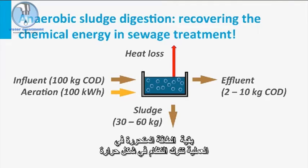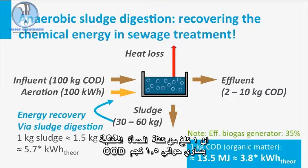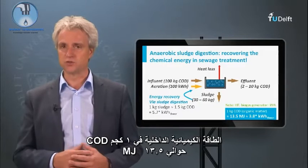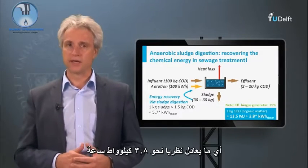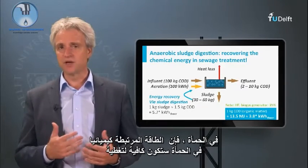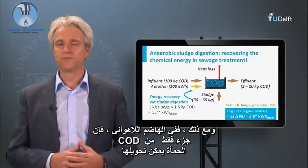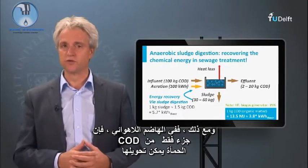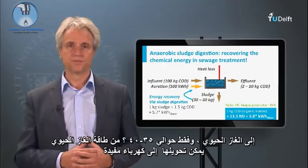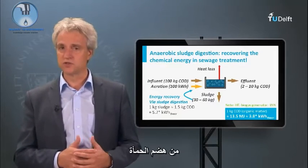The rest of the energy liberated in the process leaves the system as heat. One kg of produced sludge mass equals about 1.5 kg of COD. The chemical energy enclosed in 1 kg of COD is about 13.5 MJ, which theoretically equals about 3.8 kWh. If 50% of the COD entering the sewage treatment plant ends up in the sludge, the chemically bound energy would be sufficient to cover the energy requirement. However, with anaerobic digestion, only a fraction of the sludge COD can be converted to biogas, and only about 35–40% of the biogas energy can be converted into useful electricity using a biogas generator. Therefore, using standardized technology, only part of the required energy can be derived from sludge digestion.